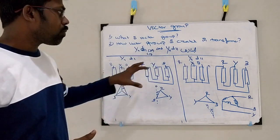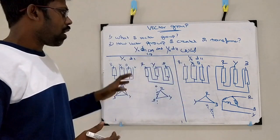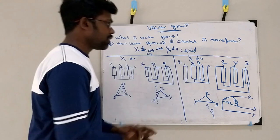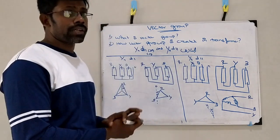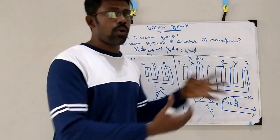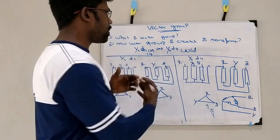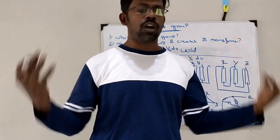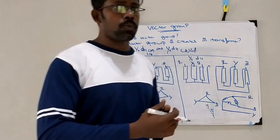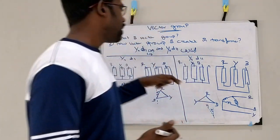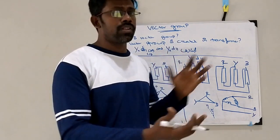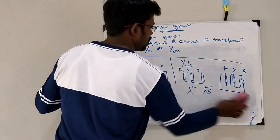In this section you can clearly understand how this vector group is created. The vector group is clearly created by the type of winding, how we connect the winding, and how we make the combination. If you mix star and delta, then only we will get the different vector groups. And this number of vector groups is also achieved by the method of connection between polarity and non-polarity regions between these three phases.